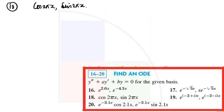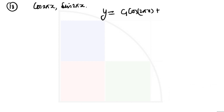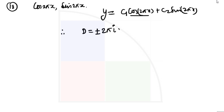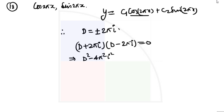The next question is question number 18 which is the trigonometric one. We can understand that the solution will be y equals c1 cos(2πx) plus c2 sin(2πx). This is how we write these kind of equations. Therefore the roots of the ordinary differential equation or the auxiliary equation will be imaginary, and those will be D equals plus or minus 2πi.